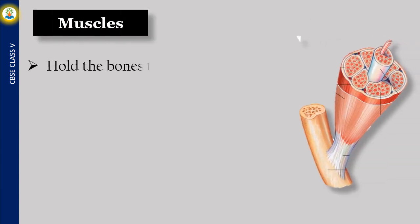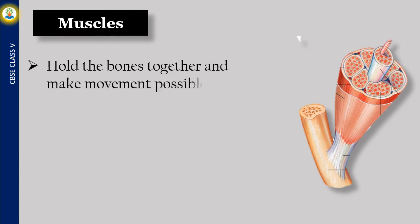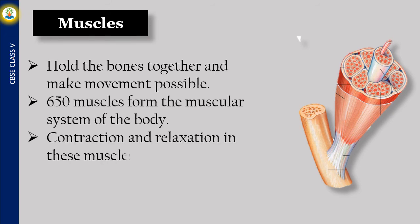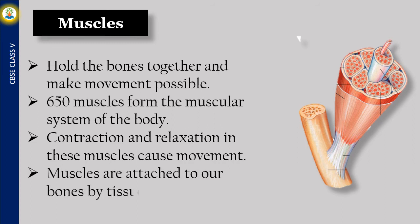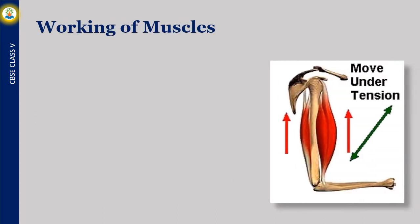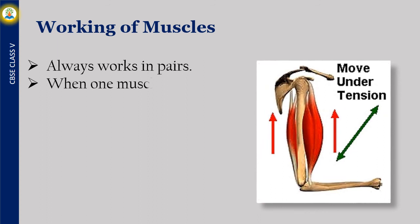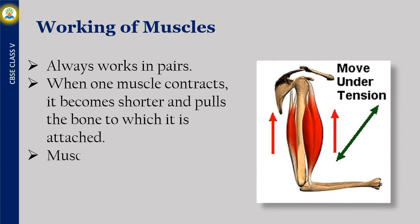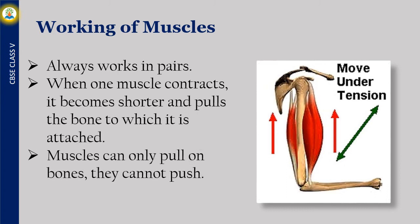Muscles hold the bones together and make movement possible. Almost 650 muscles form the muscular system of the body. Contraction and relaxation of these muscles cause movement. Muscles are attached to our bones by tissues called tendons. Muscles always work in pairs — when one muscle contracts, it becomes shorter and pulls the bone to which it is attached. Muscles can only pull on bones; they cannot push.